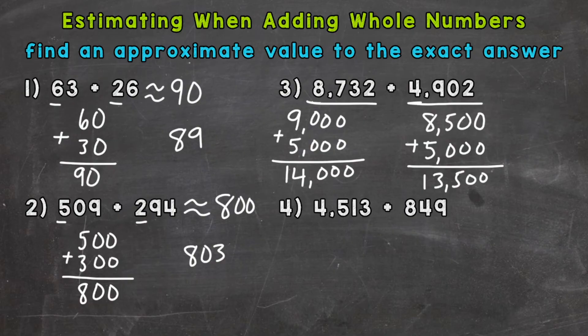So a little different there but they are still close. So let's see which one gives us a better estimate. So the exact answer to number 3 is going to be 13,634. So this is going to be a closer estimate here. And that's because 8,500 is closer to our actual problem 8,732 than 9,000 is. So the closer you round, the better your estimate is going to be.